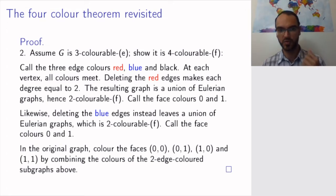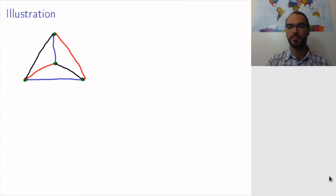So, when I deleted the blue edges, I had put back the red edges. Now, I put back the blue edges. And in the original graph, I combine the color coming from the red edge removal and the color coming from the blue edge removal into these four possible colors of faces. And one can show that this gives a face coloring in the sense that different faces that have an edge in common will have different colors.